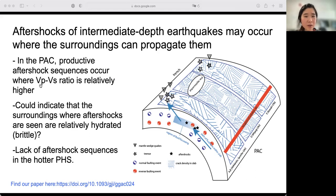The key takeaway here is that the presence of aftershocks seems to be related to the ability of the surroundings to propagate the aftershocks rather than the mechanism of the intermediate-depth earthquakes themselves.